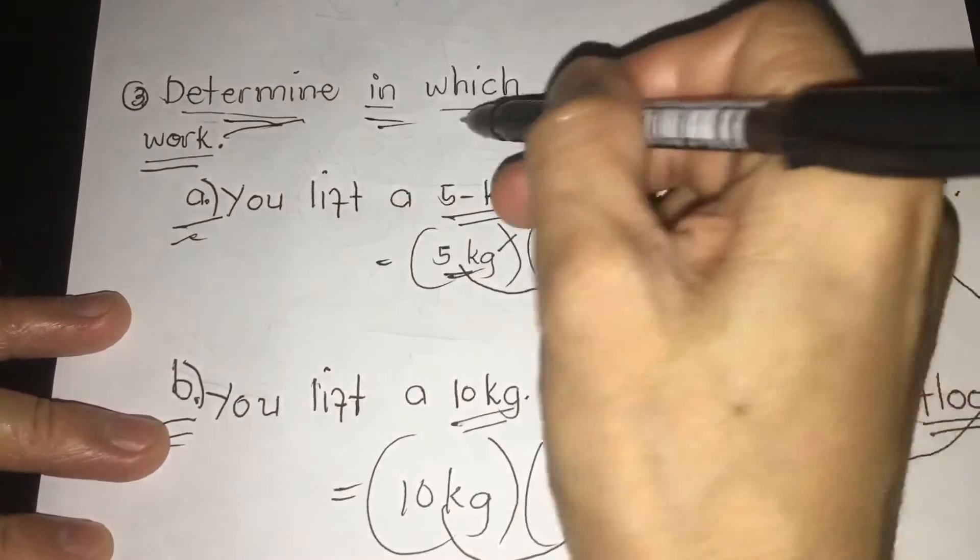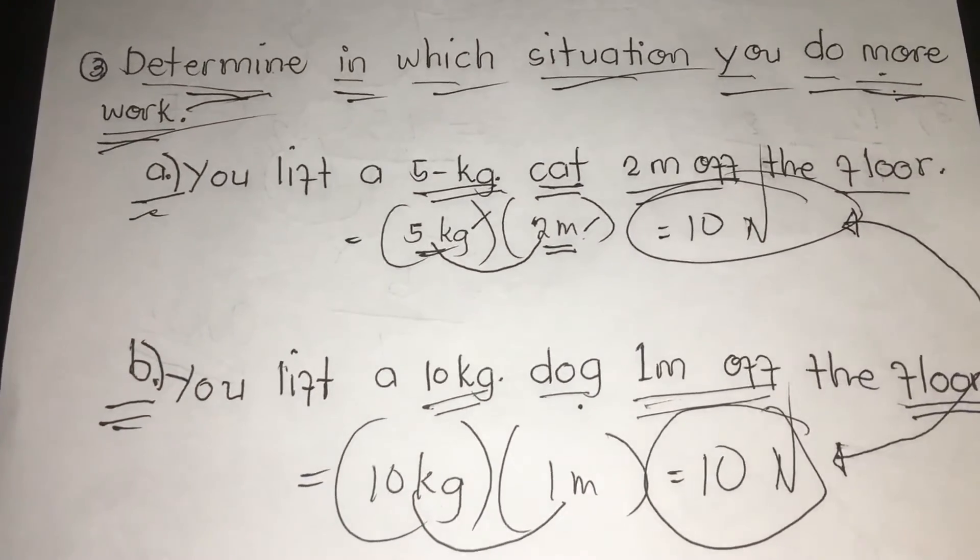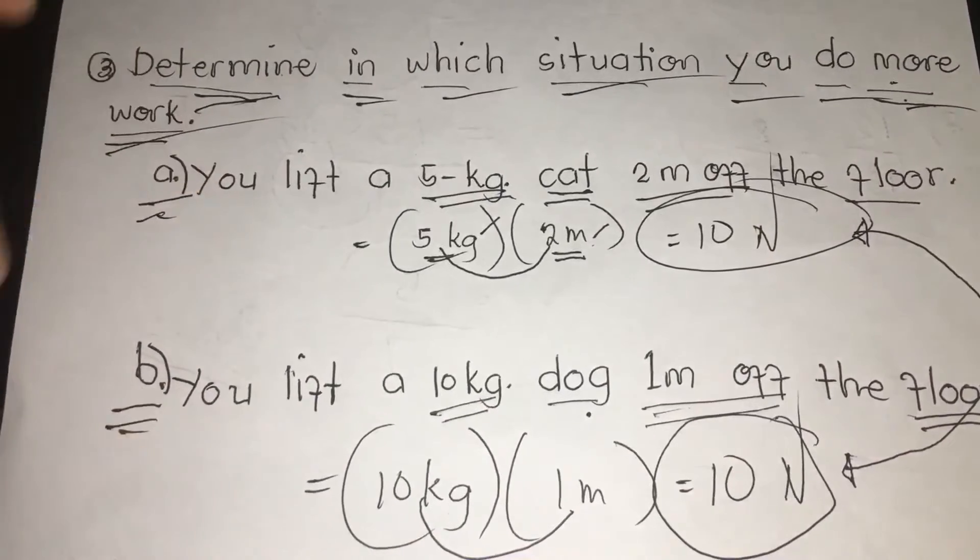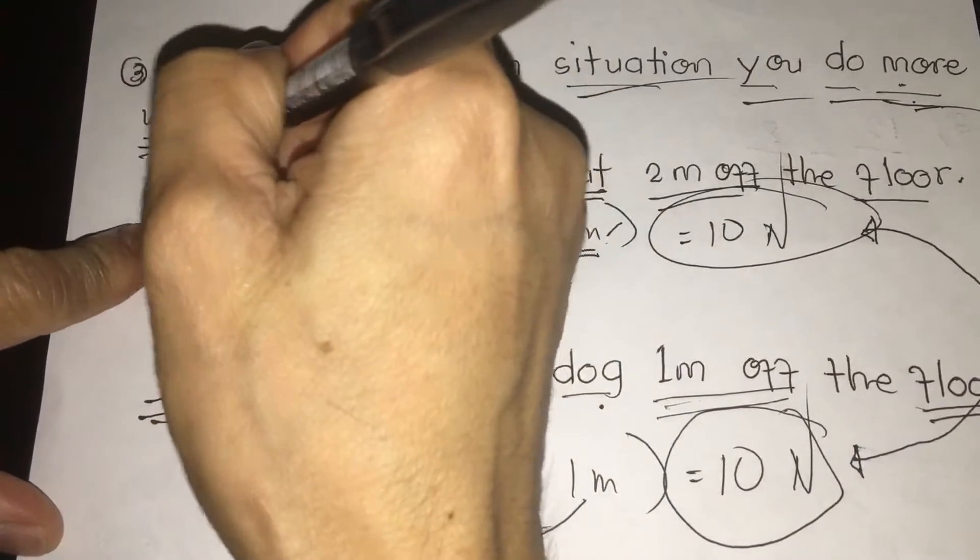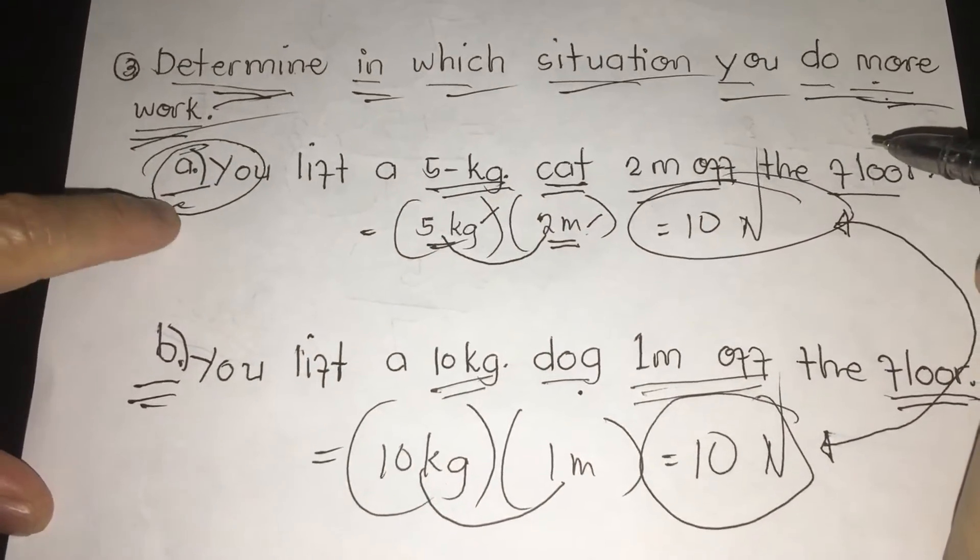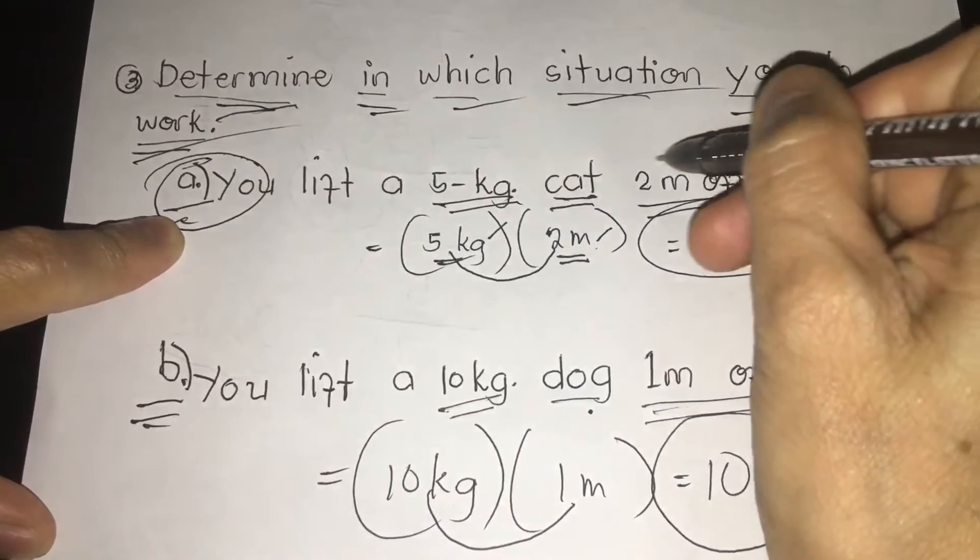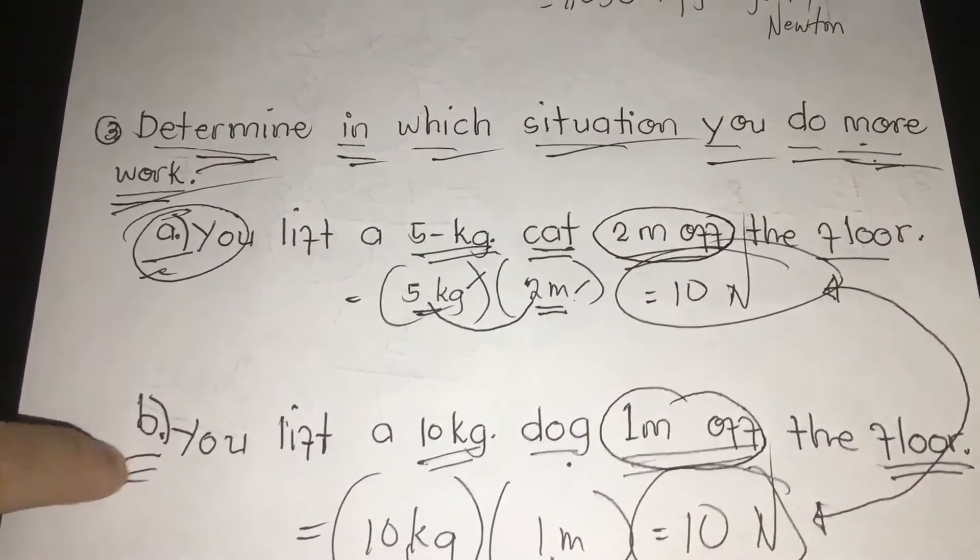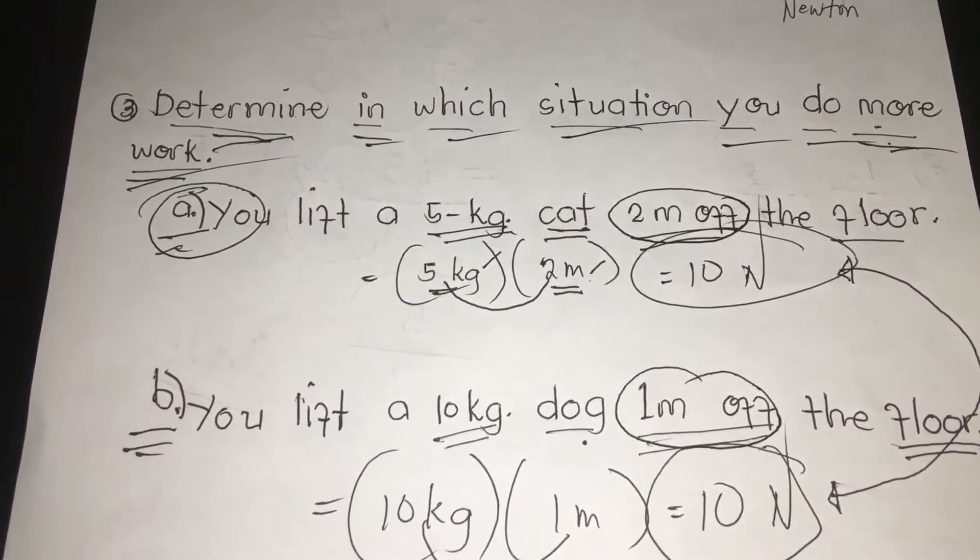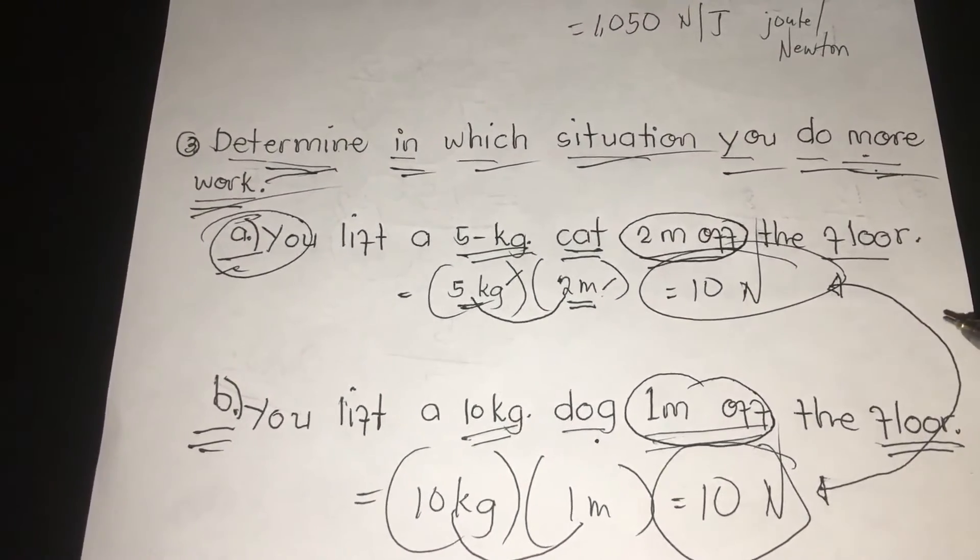But, the question is, we are going to determine in which situation you do more work. When we think class, our word problem A and B, we choose A. Why? A is what we call the situation we do more work. Why? The distance is 2 meters. Whereas in B, 1 meter. Am I right? This is very much interesting in solving physics.